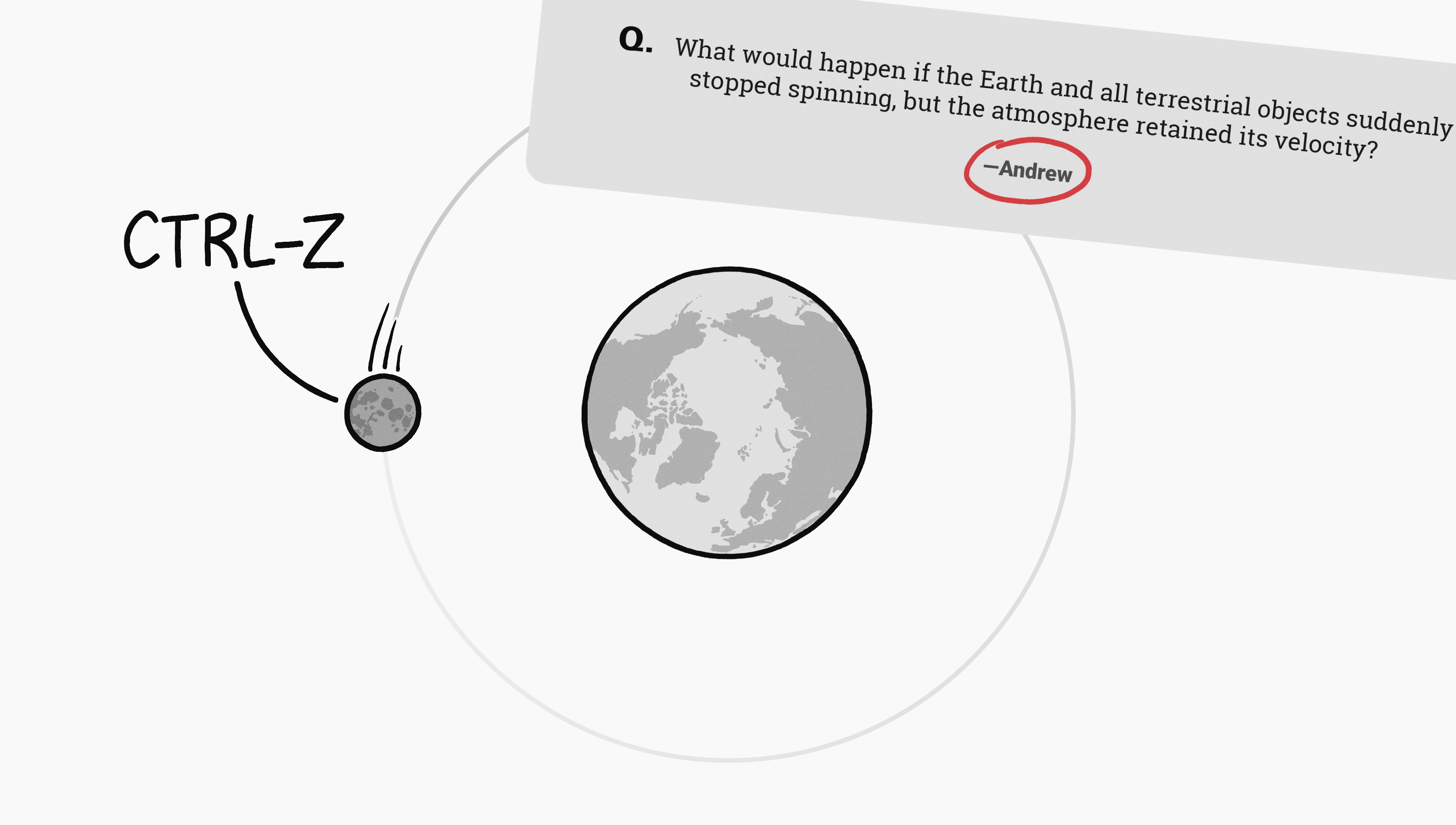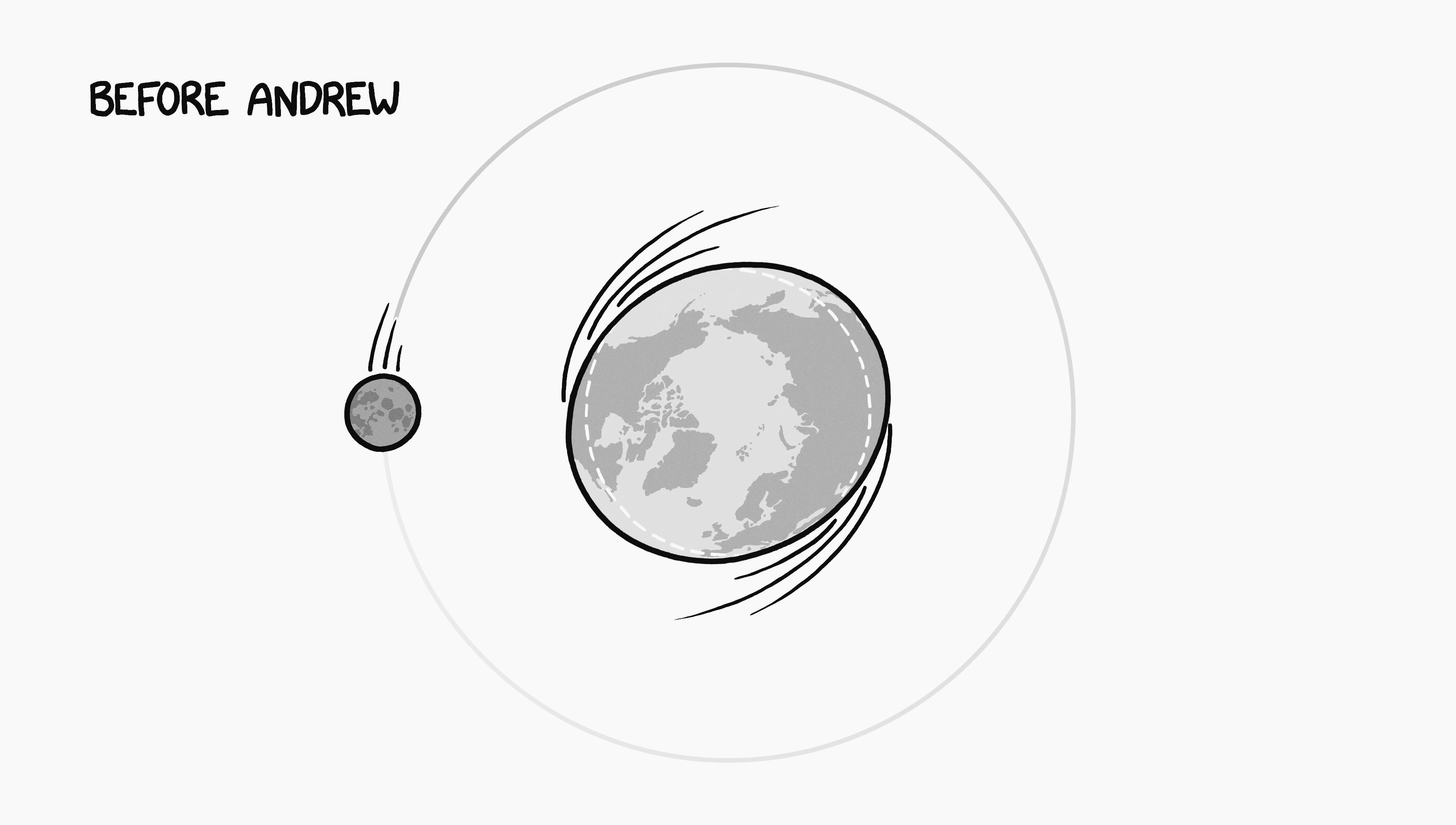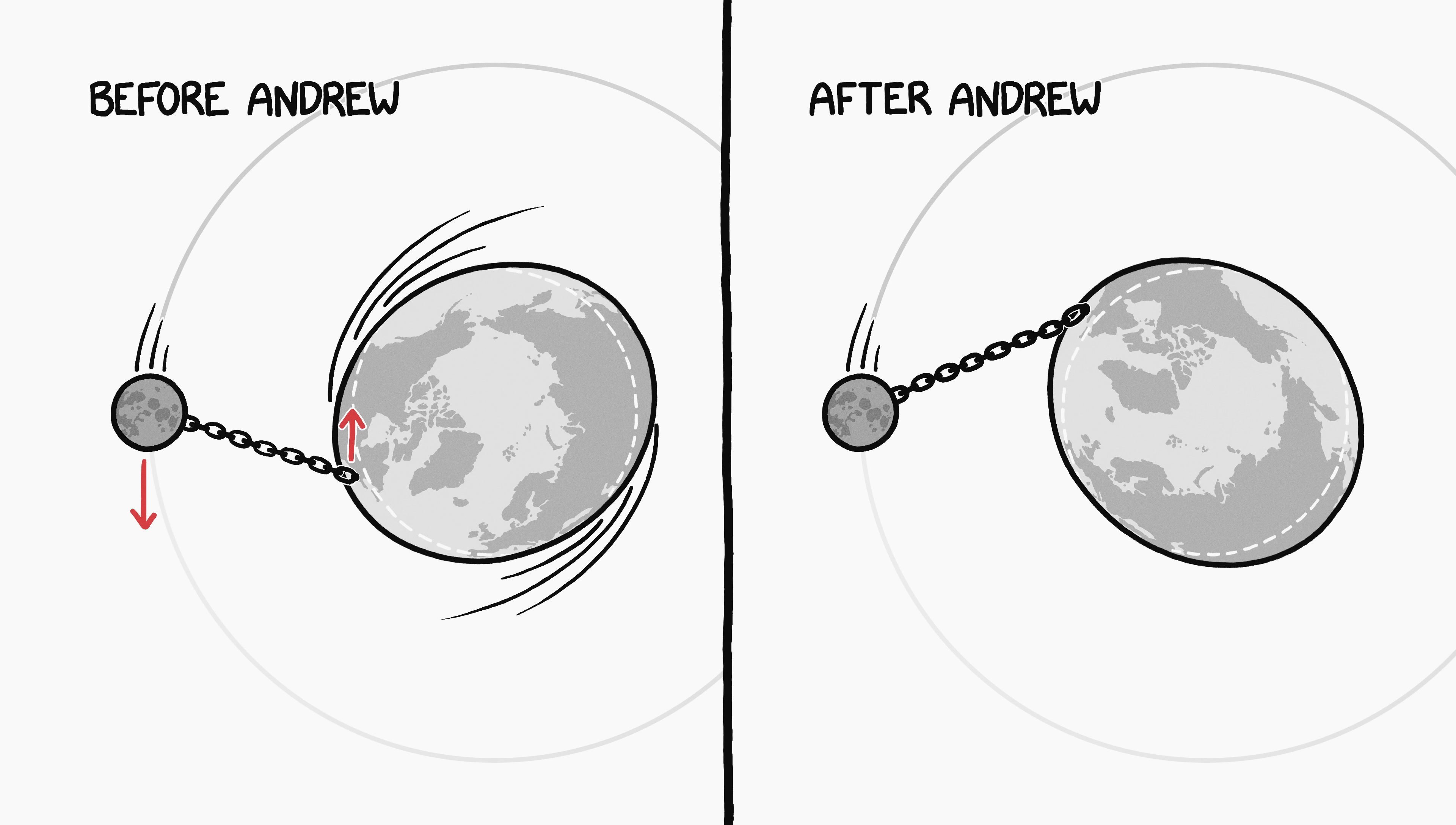Remember, this is all Andrew's fault. Before Andrew, the earth's tidal bulge, created by the moon's gravity, slowed down our rotation while dragging the moon into a higher orbit. After Andrew stopped the earth's rotation, the moon's gravity would tug on the earth and, very, very, very gradually, speed us up again just a little while it slowed down.